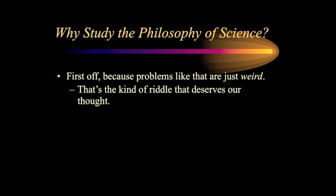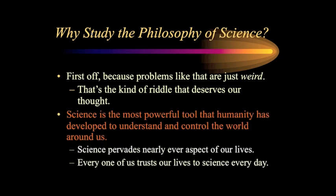First off, because problems like that one are just weird. Are there two statues or are there one? How can sense perception and empiricism seem to lead us into mutually incompatible directions like that? That puzzle — that paradox that Eddington gives us — deserves our attention and our thought. Another issue is the fact that science is the most powerful tool that humanity has developed to understand and control the world. Science pervades pretty much every single aspect of our lives, not the least of which is the computer on which I'm making this video, the computer upon which you're watching it, and the internet which is connecting the two of them.